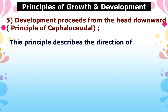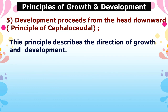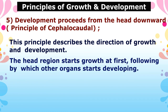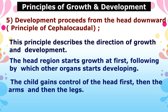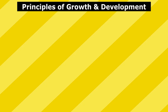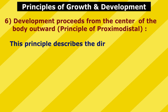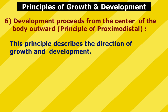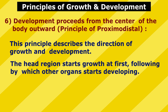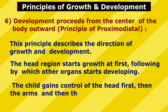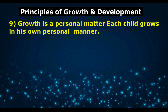5. Development proceeds from the head downward — Principle of Cephalocaudal: This principle describes the direction of growth and development. The head region starts growth first, followed by other organs. The child gains control of the head first, then the arms, and then the legs.